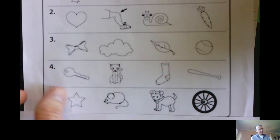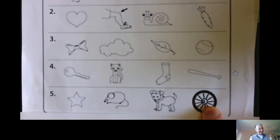Last one. Star, mouse, dog, wheel. Which one has the long E sound? Wheel. W-H-E-E-L. Good job.